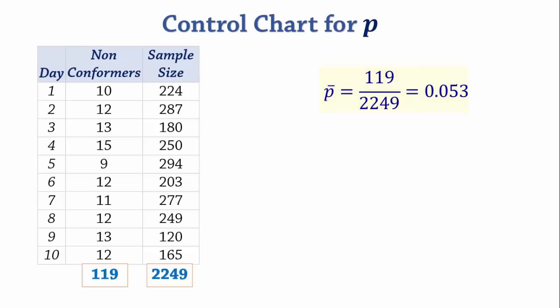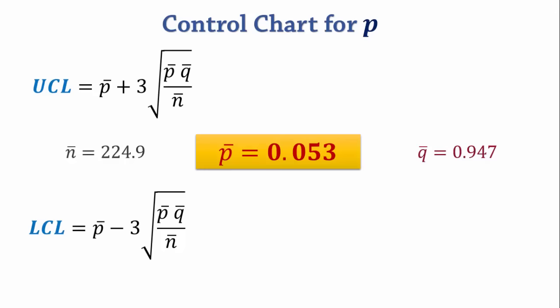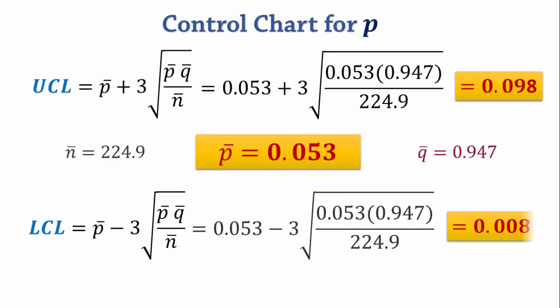The average sample size is total sample size divided by the number of samples, which gives 224.9. We now have the values required to calculate the limits. The upper control limit is 0.098, and the lower control limit is 0.008.